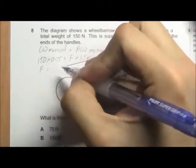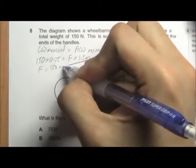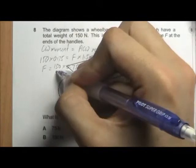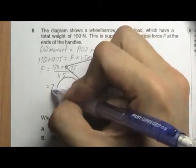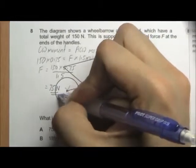F equals 150 multiplied by 0.75 divided by 1.5. The answer will be 75 N, Answer A.